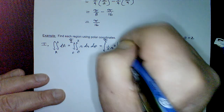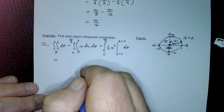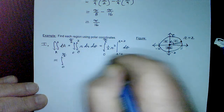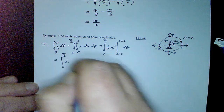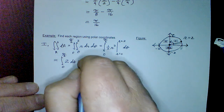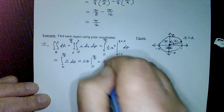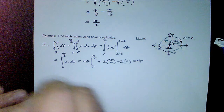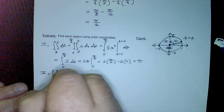Evaluating Region 1: the inner integral gives (1/2)r² from 0 to 2, which is 2. Then we integrate 2 dθ from 0 to π/2, giving 2θ evaluated at those limits: 2·(π/2) − 2·0 = π.